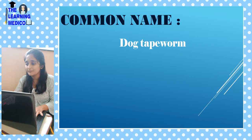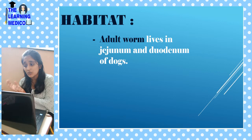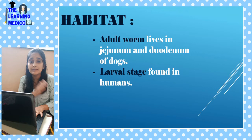Distribution: in India, it is found in the tropical region. Habitat: the adult worm is found in dogs, in the jejunum and duodenum. The larval stage is found in human beings. So, the adult worm is in the dog and the larval stage is in man.